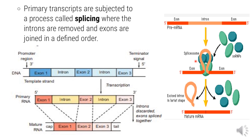The spliceosome enzyme complex removes the introns. After removing introns, the exons are joined together. This produces mature mRNA, which is now ready for translation and can exit the nucleus.